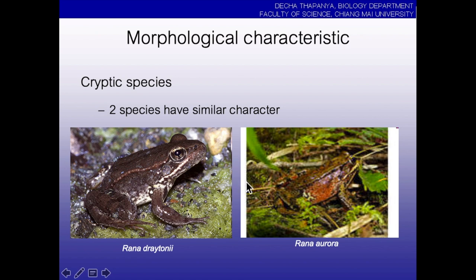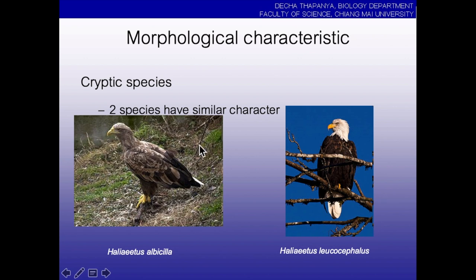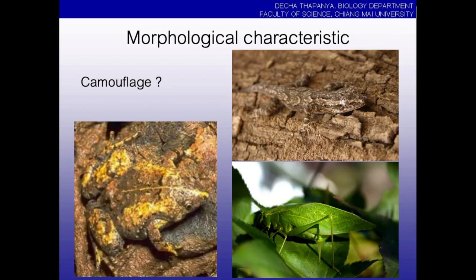We also find the cryptic phenomenon in birds. Some birds are quite similar, like two eagle species — they are quite similar but it's not like mimicry because neither is made to look more dangerous; they are both dangerous. There is also a special one called camouflage, which means imitating the environment.